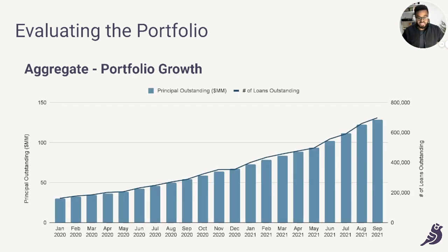From this, we can see how both the number of loans outstanding and the size of the outstanding loan portfolio have changed over time. We typically want to see both of these numbers growing, as they indicate that the company itself is growing. That said, this is not a hard and fast requirement, because sometimes there are good reasons for a shrinking portfolio. For example, during COVID-19, the portfolio for most consumer lenders shrank as they stopped making loans.